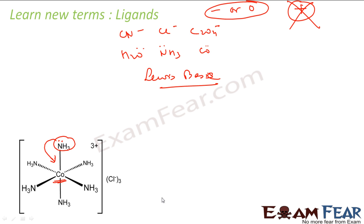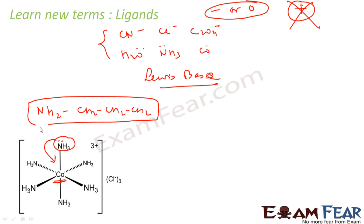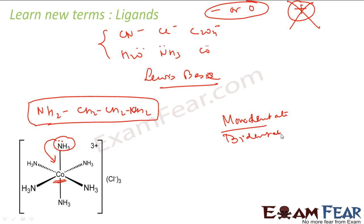We have small ligands and large ligands. For example, we have NH2-CH2-CH2-CH2-CH2, which is called 1,2-diaminoethane. We have different kinds of ligands. We have chelating ligands which form a chain-like structure. The different types include monodentate ligands, bidentate ligands, tridentate ligands, hexadentate ligands, ambidentate ligands, and chelate ligands. We will discuss each one by one.